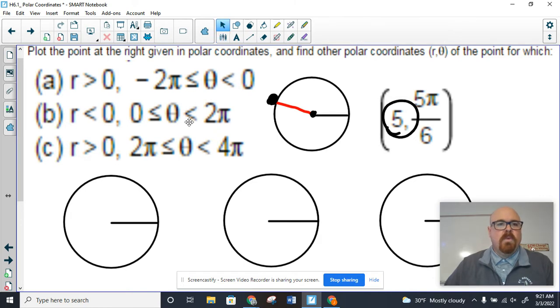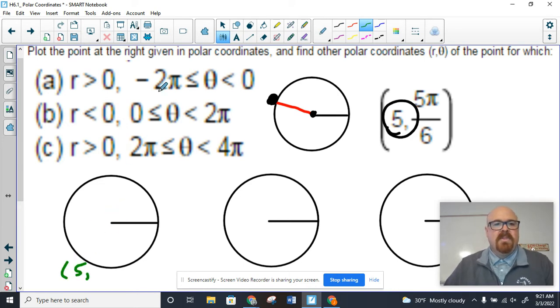The first part here wants a positive R value, so that's easy. It's going to be 5. So we know that our R value is going to be 5. But they want us to use a measurement for theta that is between -2π and 0.